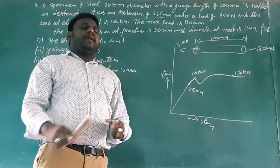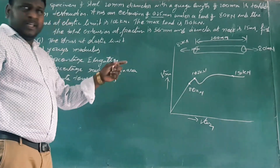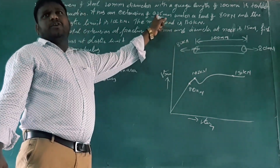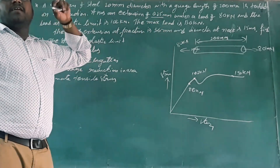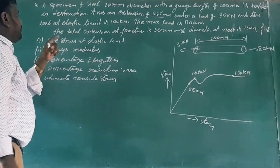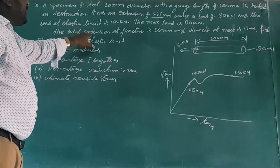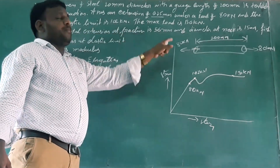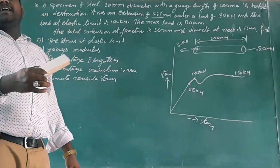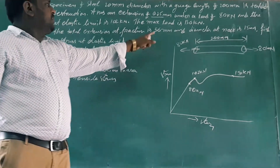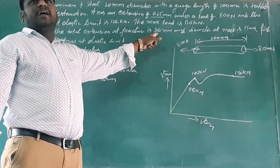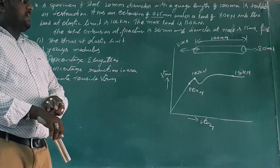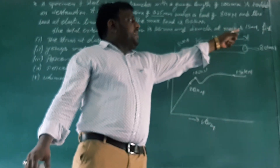Now, given the data for this problem: the extension at the proportional limit is 0.25 mm. The total extension at fracture is 56 mm, and the diameter at the neck (after fracture) is 15 mm — wait, the diameter at the neck is given as 50 mm.